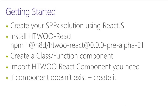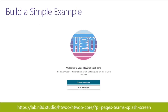Getting started is very similar to using Office Fabric React. You create your SharePoint framework solution with the React JS library, then install H2O React. It's currently a pre-alpha release but we'll be updating that fairly soon as we're getting close to general availability. You install it using `@n8d/h2o-react`, the current build is 21. Then you create a class or function component — hooks or class components both work — and import the H2O React component you need.